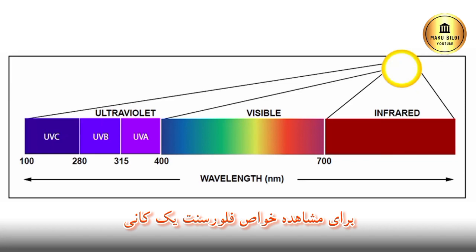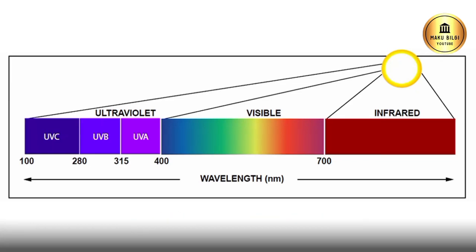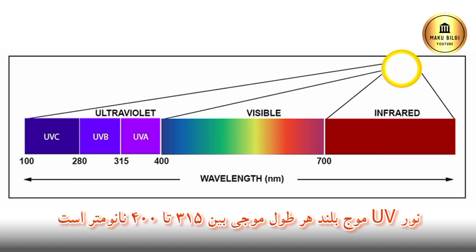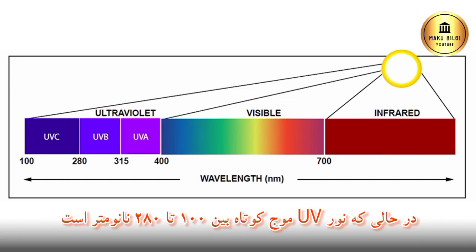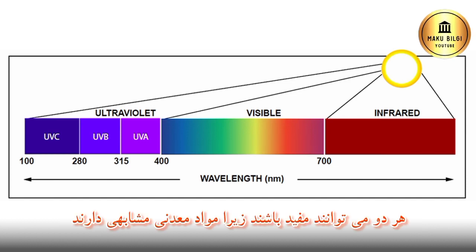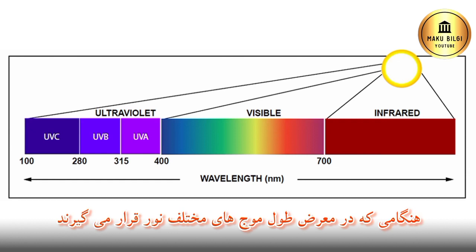To view a mineral's fluorescent properties, it's helpful to have a source for long-wave and short-wave UV light. Long-wave UV light is any wavelength between 315 and 400 nanometers, while short-wave UV light is anywhere between 100 and 280 nanometers. Both can be useful since the same mineral may fluoresce a different color when exposed to different wavelengths of light.